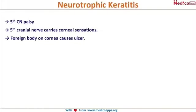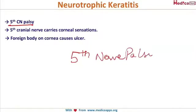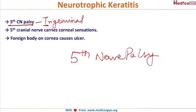Another condition, similar but different, is neurotrophic keratitis, which is due to fifth cranial nerve palsy — the trigeminal nerve. These two can be confusing in your exam, so here is an easy way to remember: the letter 'T' is present in both trigeminal and neurotrophic — 'tr' and 'tr' — so neurotrophic is due to the trigeminal, that is, fifth cranial nerve palsy.